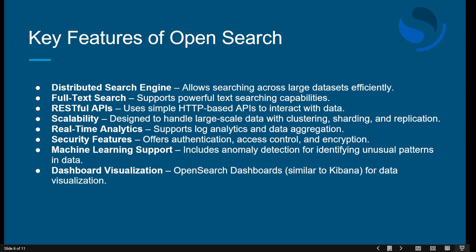Let's talk about the key features of OpenSearch. The first feature is the distributed search engine, which allows searching across large datasets efficiently. It makes searches very fast and scalable even when handling large amounts of data. For example, if you have millions of records stored across different servers, OpenSearch can help you search them quickly and efficiently.